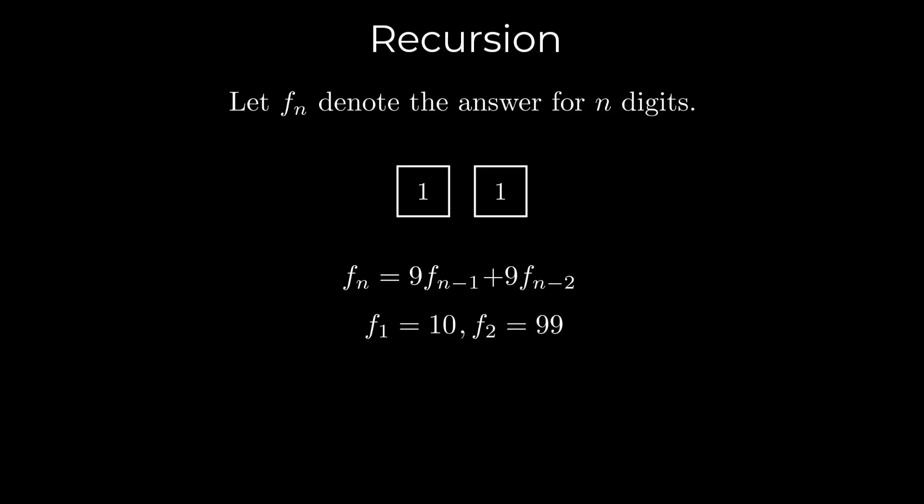Using the recurrence and base conditions, we calculate f5 to be 96,309. Our sample space consists of 10 raised to the power 5 numbers. So the required probability is f5 divided by 10 raised to the power 5.